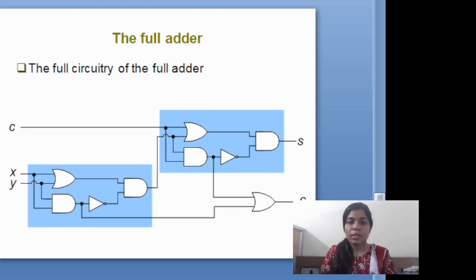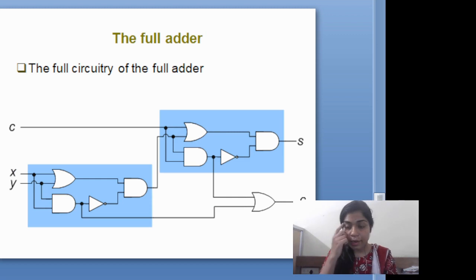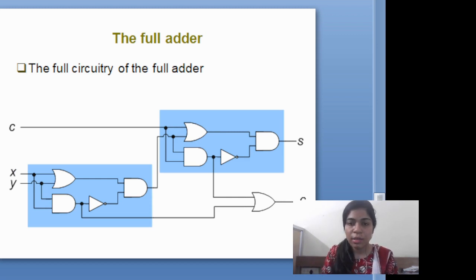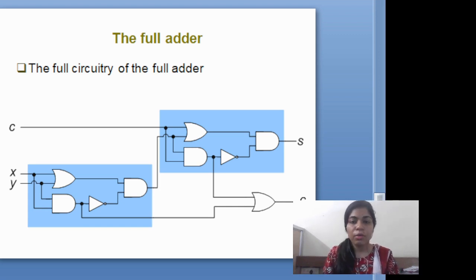This is the circuit diagram of a full adder. In a full adder, we will use two half adders. You can see the sky blue color here — it is one half adder. And this is the second half adder. So two half adders make one full adder.